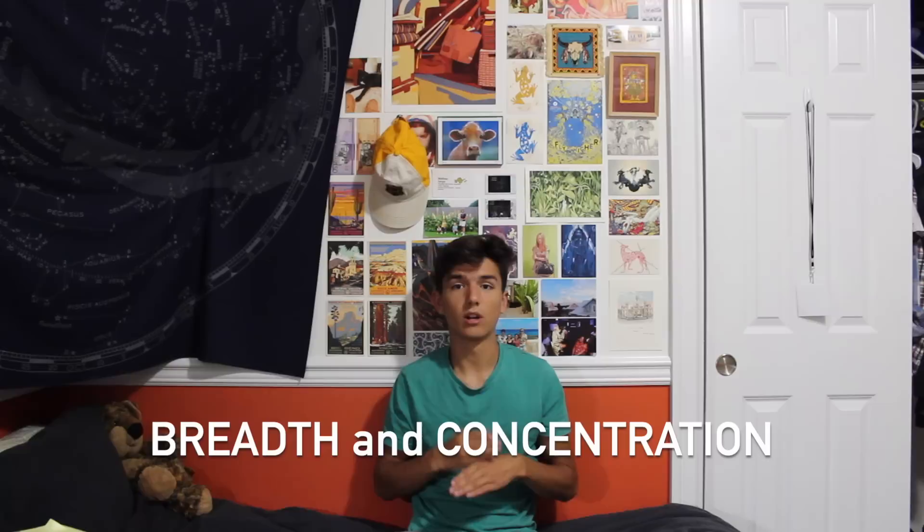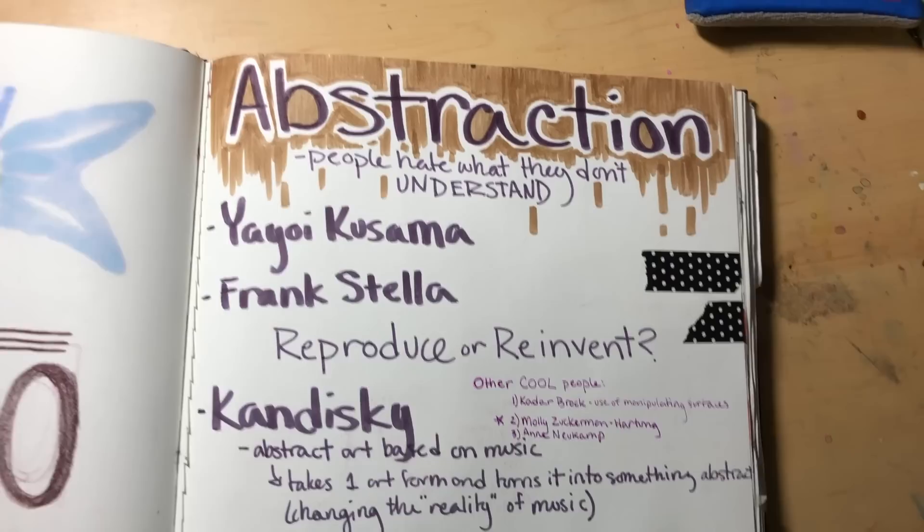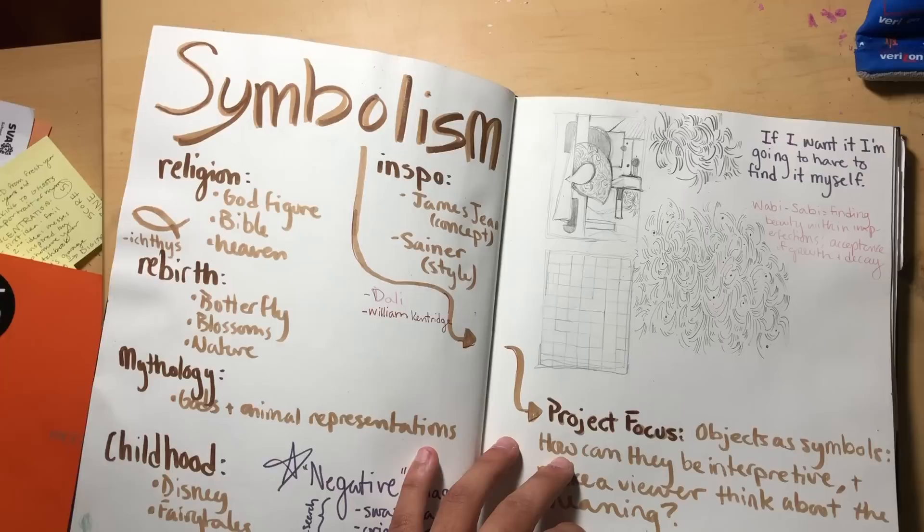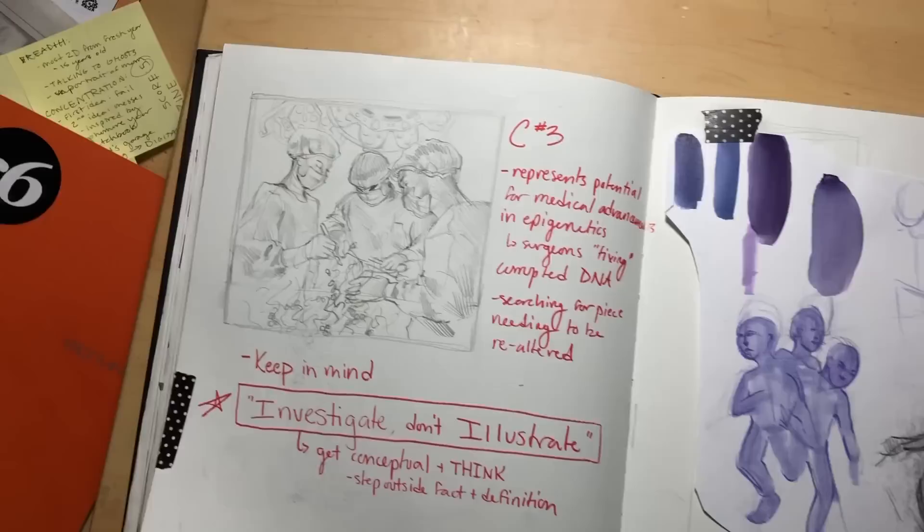You had your breadth and your concentration. Breadth is 12 pieces, concentration is 12 pieces. The difference is that breadth is a series of work that doesn't correlate — you're encouraged to experiment and try a lot of new things. Your concentration is one topic you're extremely interested in and a style you're really committed to, exploring that style and topic together in 12 different pieces.